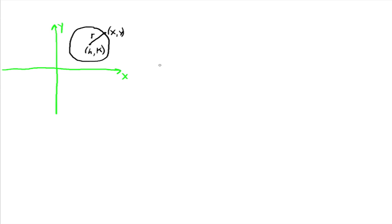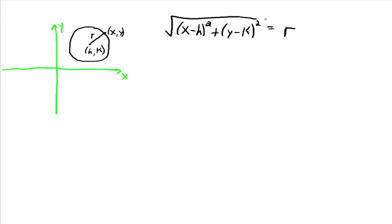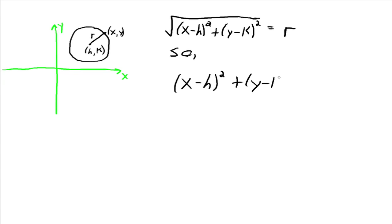So what is r? Well, r is just the distance between these two points, h, k and x, y. So we can just find the distance between these two points. We'd have the square root of (x minus h) squared plus (y minus k) squared is equal to r. That's just straight from the distance formula. Now, if we want to get rid of the square root sign, we square both sides. So we have (x minus h) squared plus (y minus k) squared is equal to r squared.